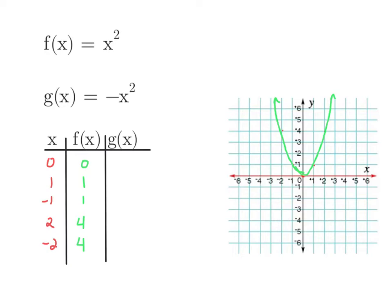Let's take a look at another kind of transformation. We'll do this with a parabola. A quadratic function has a distinct U shape — we call it a parabola. For f of x equals x squared, if we take every x value and square it: 0 squared is 0, 1 squared is 1, negative 1 squared is also 1, and 2 and negative 2 squared are both 4. Now with g, we want to find negative x squared. Be careful — a lot of you do this wrong when it's on a test.